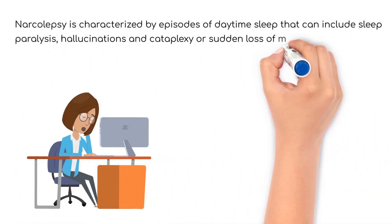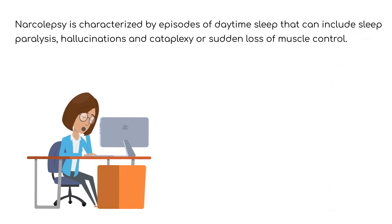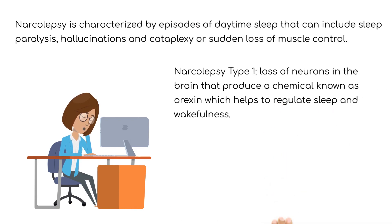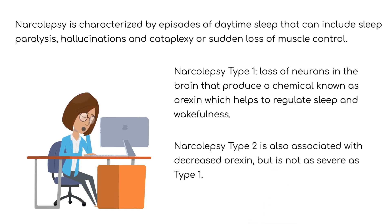Narcolepsy is characterized by episodes of daytime sleep that can include sleep paralysis, hallucinations, and cataplexy, or sudden loss of muscle control. Narcolepsy type 1 is characterized by the loss of neurons in the brain that produce a chemical known as orexin, which helps to regulate sleep and wakefulness. Narcolepsy type 2 is also associated with decreased orexin, but is not as severe as type 1. Narcolepsy can occur from genetics and diseases of the brain.